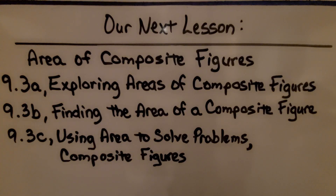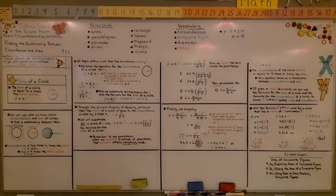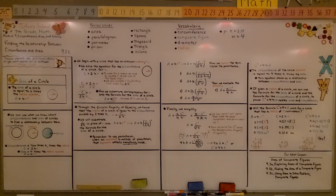We're finished with 9.2 and moving on to 9.3, which is about area of composite figures. Be cautious when working with your numbers — make sure that when it says r² you do radius times radius, and make sure you're not confusing the radius and the diameter. Have a wonderful day and please join me for 9.3.